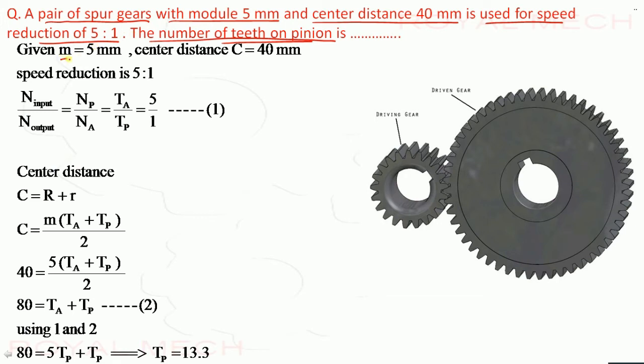A pair of spur gears with module 5 mm and center distance 40 mm is used for speed reduction of 5 is to 1. The number of teeth on pinion. So they are asking number of teeth on pinion. So they had given module as 5 mm. And center distance 40 mm.